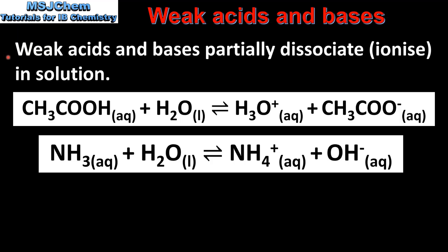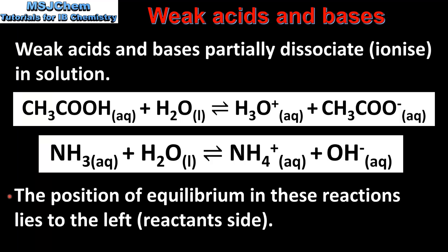Weak acids and bases partially dissociate or ionize in solution. Here we have equations for the dissociation of a weak acid, which is ethanoic acid, and a weak base, which is ammonia. Because these are weak acids and bases they only partially dissociate, meaning the position of equilibrium lies to the left — the reactants side. At equilibrium the concentrations of the weak acid and weak base will be much higher than the concentrations of the hydronium ions and the hydroxide ions.